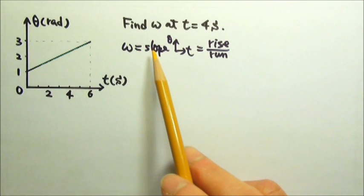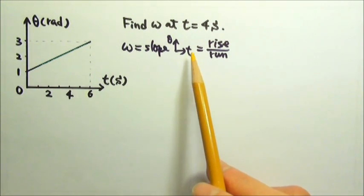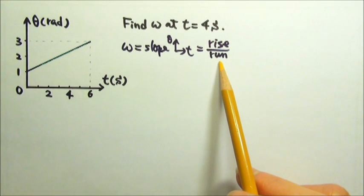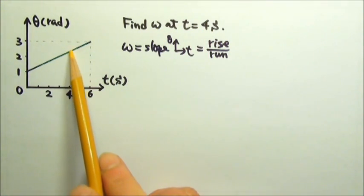The angular velocity is the slope of the angular position versus time graph, and the slope is rise over run. Now we want the slope at t equals 4 seconds, right here.